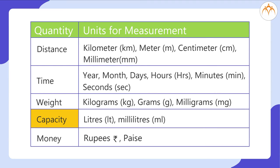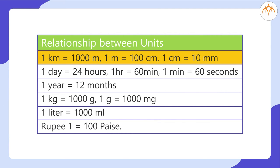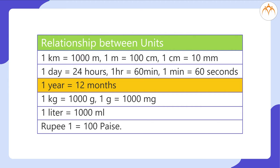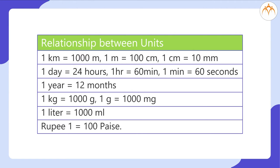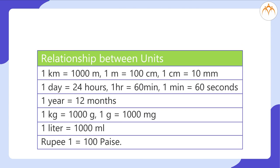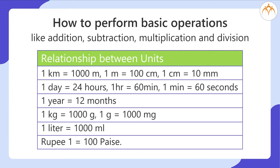Quantity: capacity — units: litres, millilitres. Quantity: money — units: rupees, paise. Relationship between units: 1 kilometer = 1000 meters; 1 meter = 100 centimeters = 10 millimeters; 1 day = 24 hours; 1 hour = 60 minutes; 1 minute = 60 seconds; 1 year = 12 months; 1 kilogram = 1000 grams; 1 gram = 1000 milligrams; 1 litre = 1000 millilitres; 1 rupee = 100 paise. We will see how to perform addition, subtraction, multiplication, and division using these units of measurement.